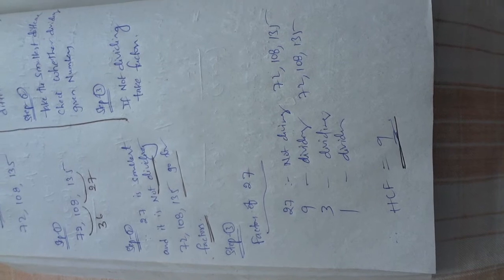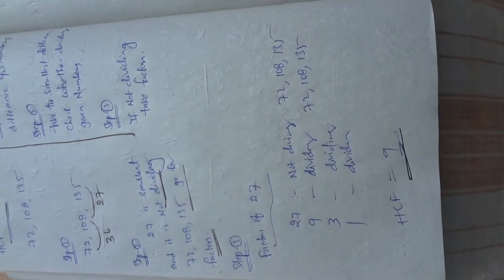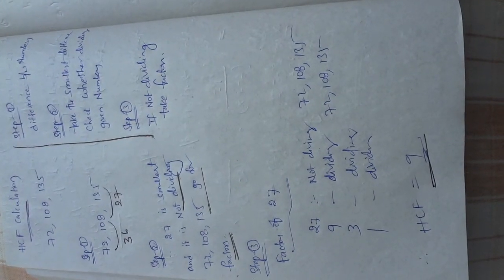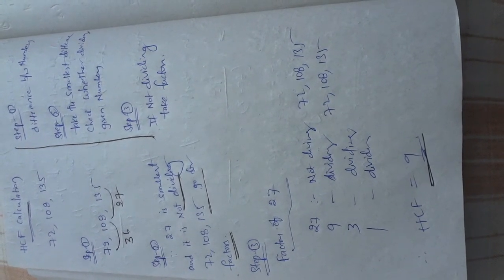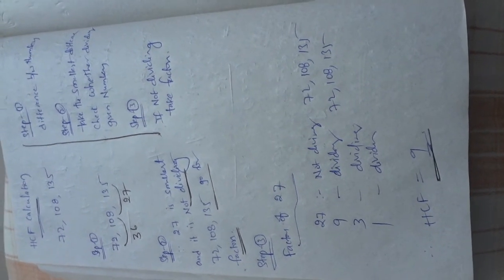Three is also dividing and one is also dividing. Since it is HCF, I must take the highest common factor. Therefore, 9 is the HCF of 72, 108, and 135. So this is the model we must follow even though they may give four numbers or five numbers.